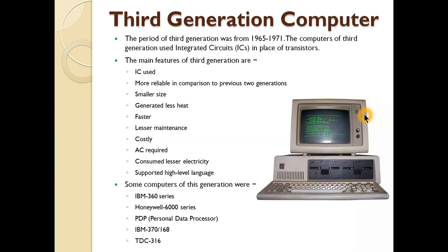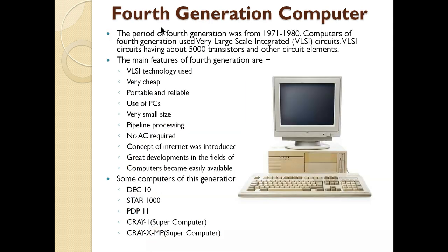After that, the third generation came from 1965 to 1971. Here, instead of transistors, ICs — Integrated Circuits — were used. ICs are even smaller than transistors, so the size of computers was smaller than the previous generation. Obviously size was smaller, cost was lower, energy consumption was less, energy released as heat was less, they became portable, and their speed increased. Examples are available for this generation.